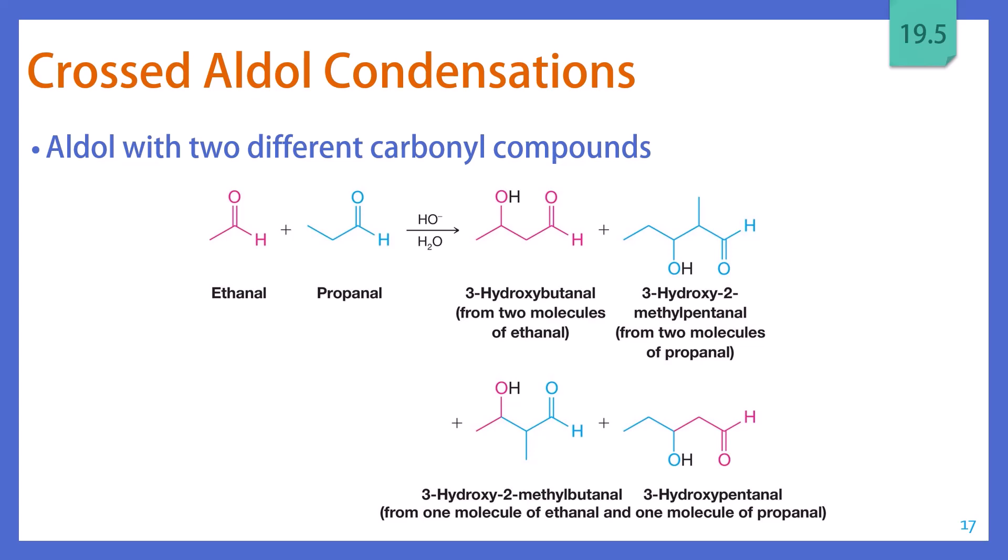But if we start off with ethanol and propanol, we have a common issue here, which is that we have two different alpha protons that could be pulled off. And that means we have two different enolates that could be formed. We also know that in aqueous hydroxide, our enolates are going to be in equilibrium.